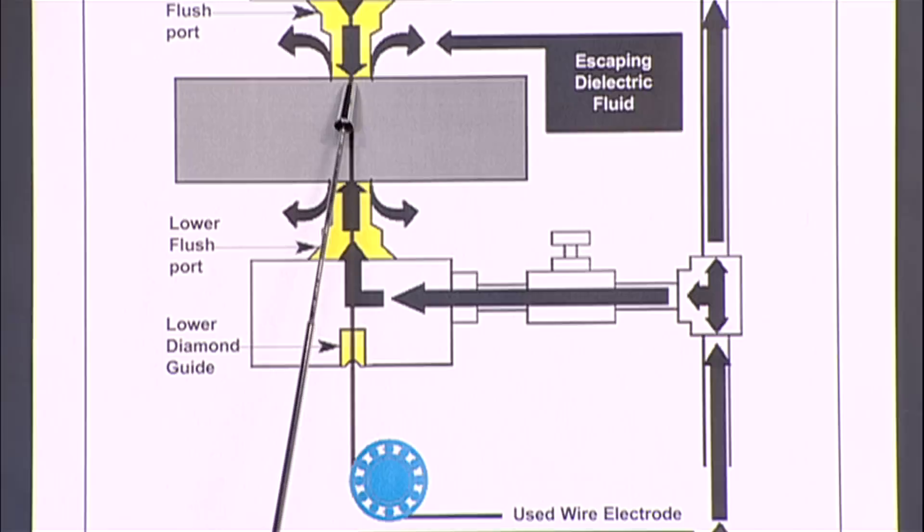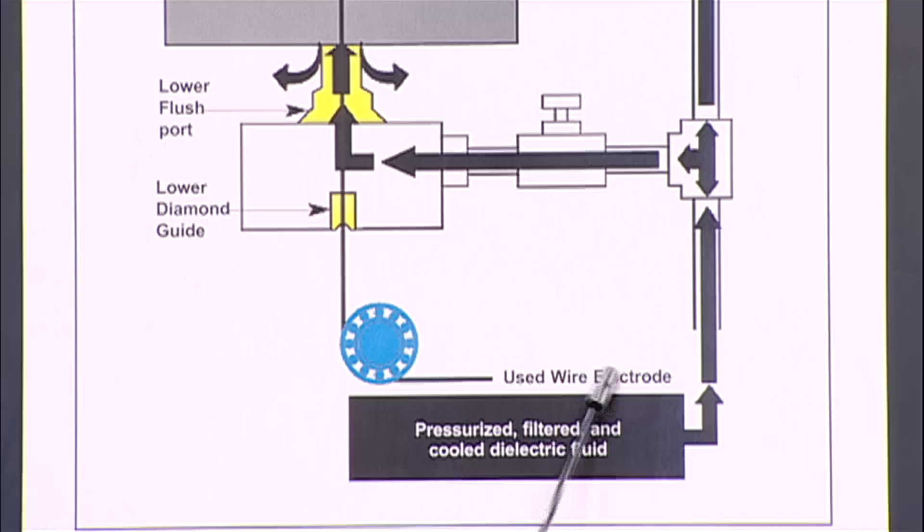So here's the wire going through here. And then the bottom roller over here, the wire goes out. This is the used wire electrode.